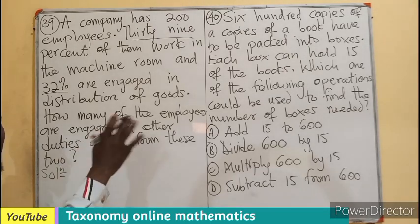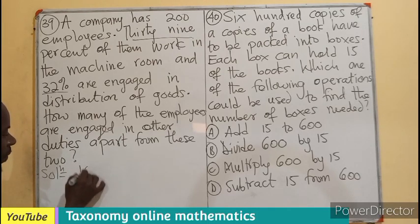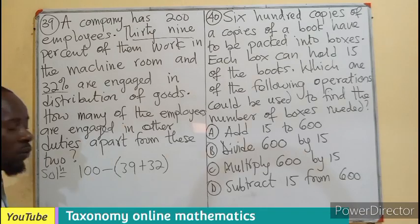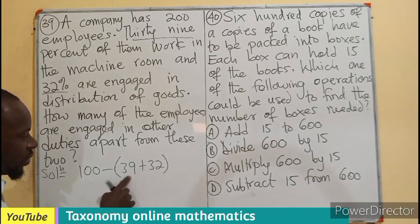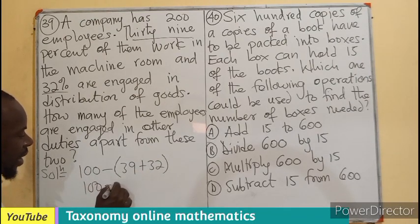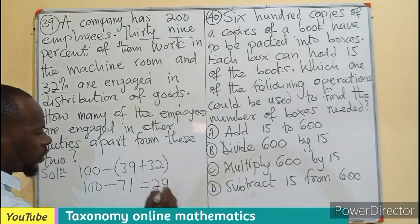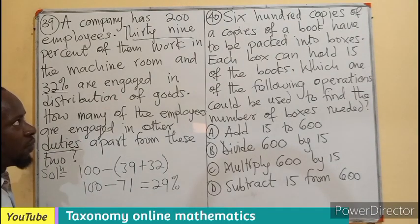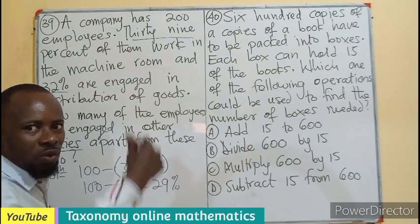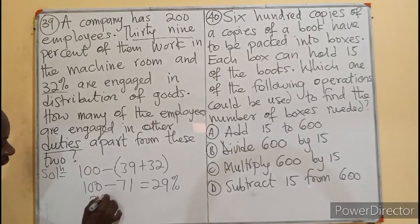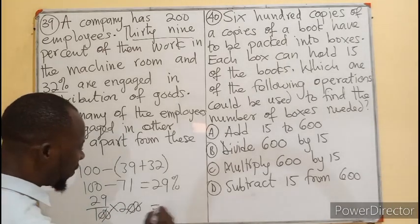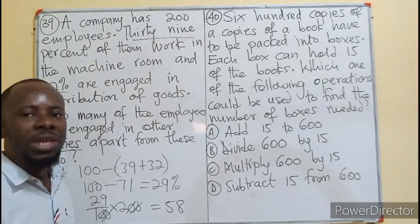I know that those working in other duties will account for 100 percent minus 39 plus 32 percent. That gives us 100 minus 71, which equals 29 percent. So 29 percent of the workers are engaged in other duties. To find the actual number of employees: 29 over 100 times 200 employees. The 100 cancels, and 2 multiplied by 29 gives us 58. So 58 employees are working in other duties.